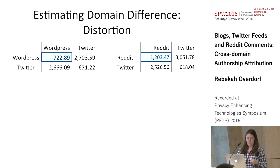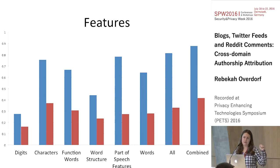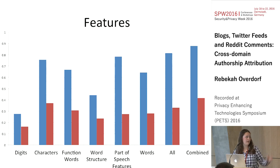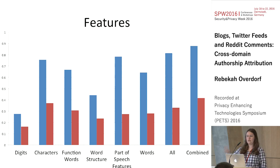We saw that features are more distorted across domains, but is that true of all features consistently? Function words and part-of-speech tags have been heavily suggested for cross-domain tasks. We took different feature types — digits, characters, function words — and used only those for classification. Nothing really outperforms using all features together, and function words don't perform as well across domain as all part-of-speech tags do. There's no single feature type that works well in this cross-domain situation.